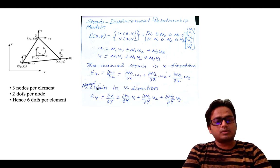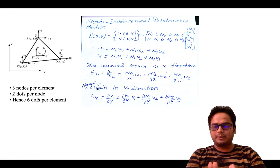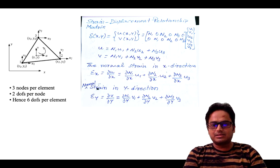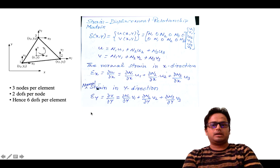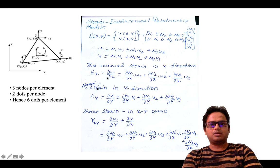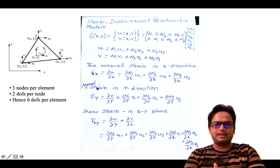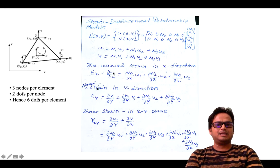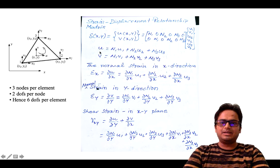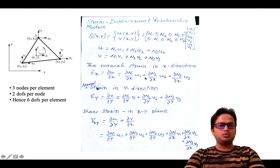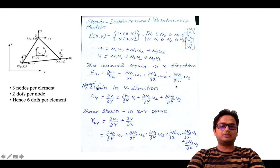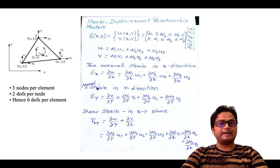At any point in a constant strain triangle used for plane stress or plane strain problems, there are three strain components: normal strain in x direction, normal strain in y direction, and shear strain. The normal strain in x direction, epsilon_x, is given by du/dx. Differentiating u with respect to x, since n1, n2 and n3 are functions of x and y, we get: dn1/dx·u1 plus dn2/dx·u2 plus dn3/dx·u3.